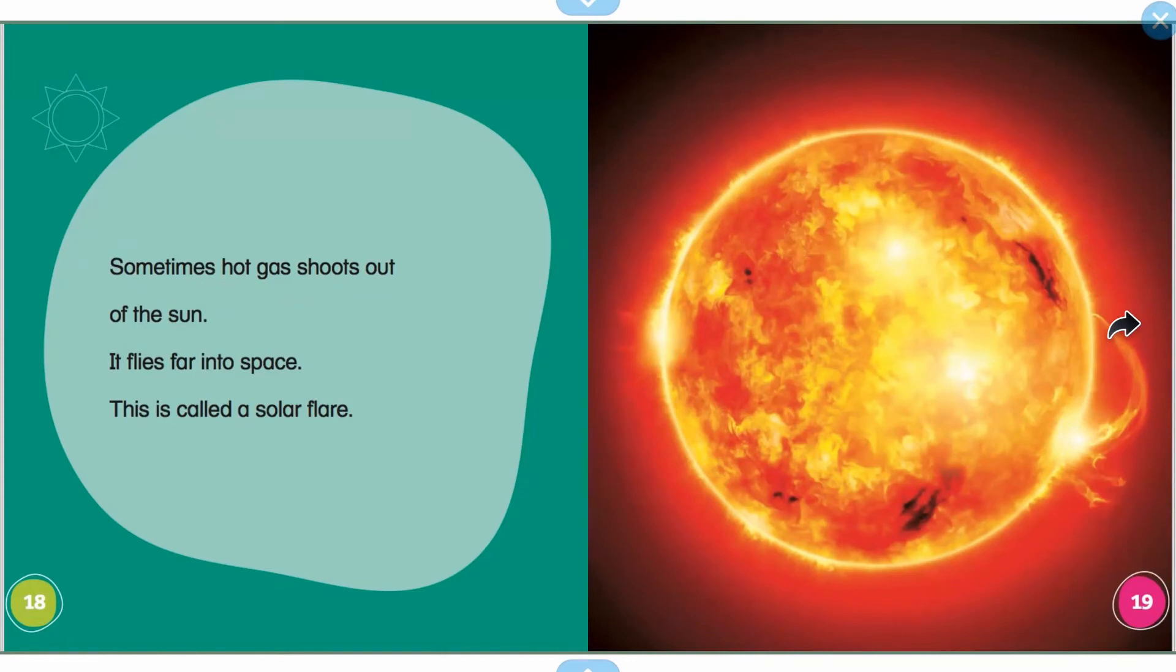Sometimes hot gas shoots out from the sun. It flies far into space. This is called a solar flare. So right here, you can see where the hot part of the sun is shooting out and it travels through space. That's called a solar flare.